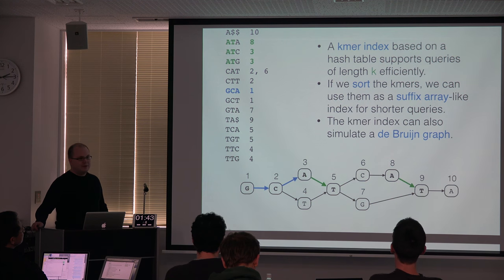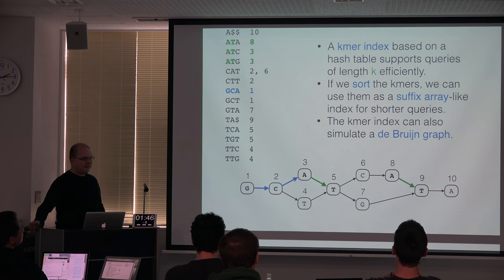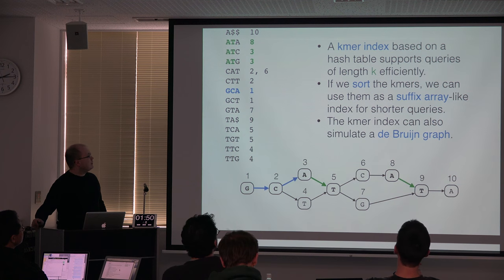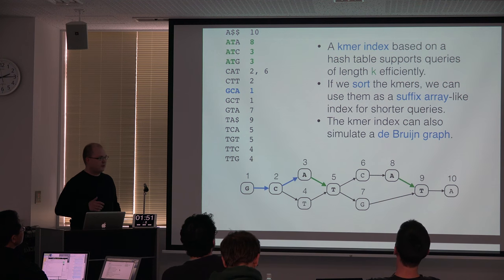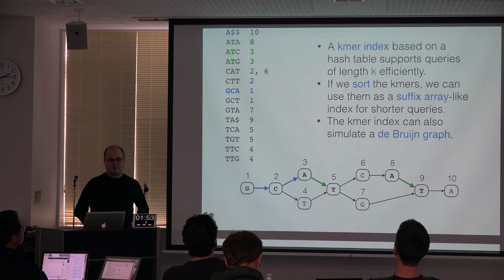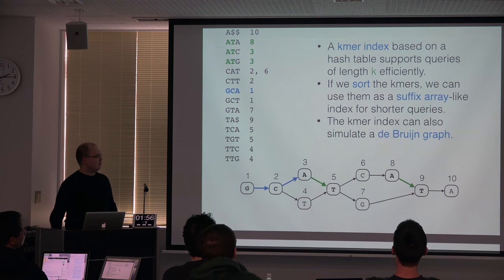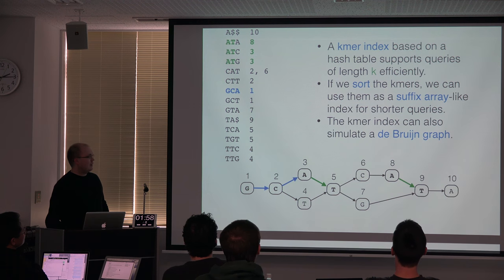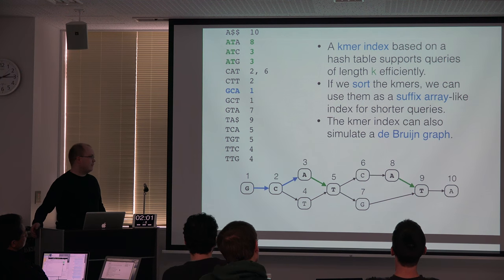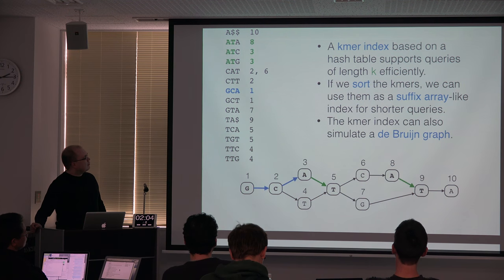We can query the graph for paths of length exactly k very quickly. We can also make it a bit slower but more general by creating something similar to a suffix array, then use binary search in the array for paths of length k or less. That's already a bit more general and more useful.